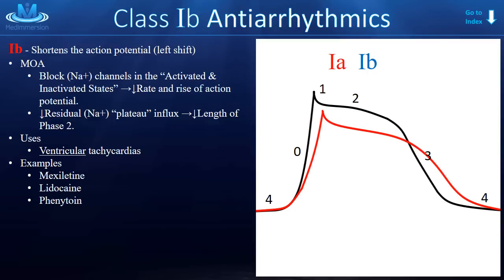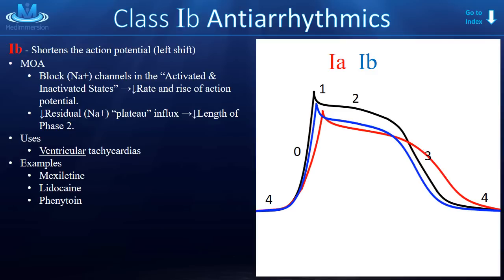Now the class 1B agents. Class 1B agents cause a shortening of the action potential, changing the shape of the curve. Their mechanism of action is related to the sodium channels — they don't block phase 0 as much as the class 1A agents. They have no effect on potassium channels, but instead decrease the residual sodium plateau influx, which helps the cell repolarize and decreases the length of phase 2. Class 1B antiarrhythmics are used for ventricular arrhythmias or tachyarrhythmias — they have no use for atrial tachyarrhythmias. The three most common examples are mexiletine, lidocaine, and phenytoin.